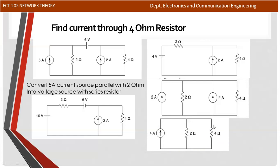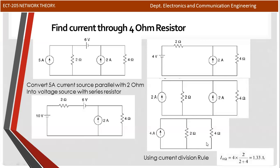The total current from the parallel current sources is combined. The currents are opposite in direction. The total resistance is the parallel combination. The current values: 4, 2, 2, 2, 2 are summed for the final result.